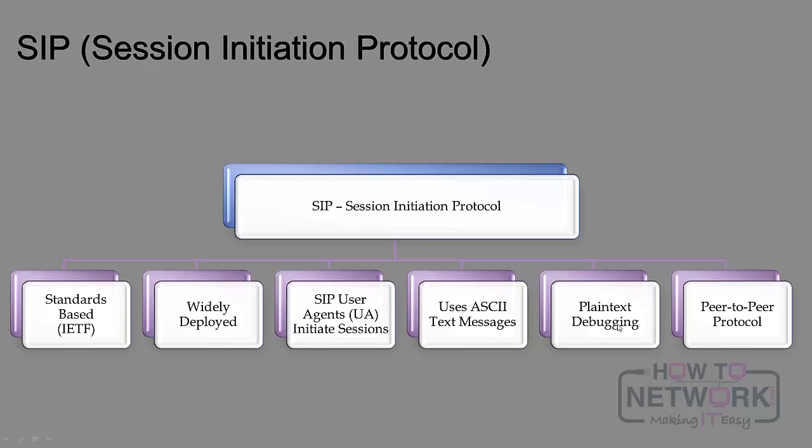SIP, like H.323, is also a peer-to-peer protocol, so there's lots of call routing intelligence native on the SIP gateway. SIP can also be used as a phone signaling protocol — when you do that, the phone itself has the intelligence to do call setup and teardown on its own. That wraps up the last protocol in this introduction to the role of voice gateways.